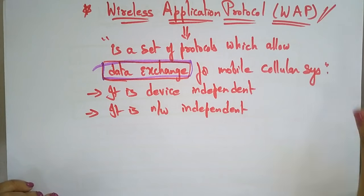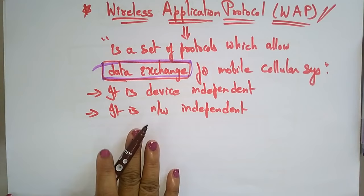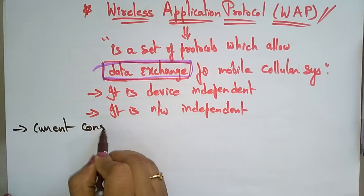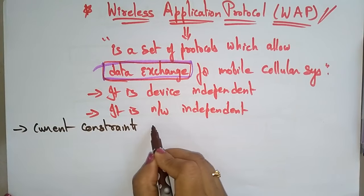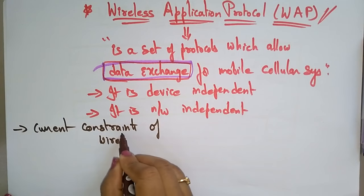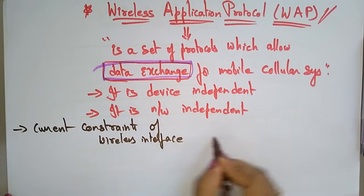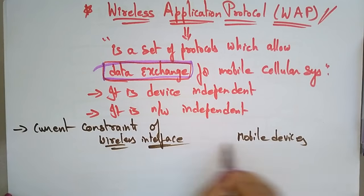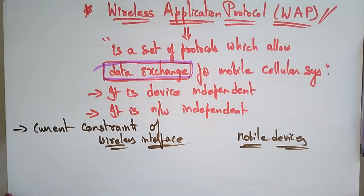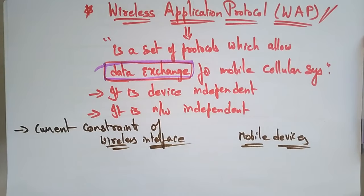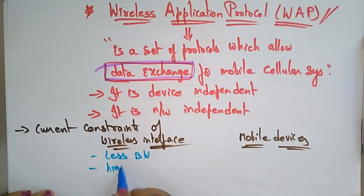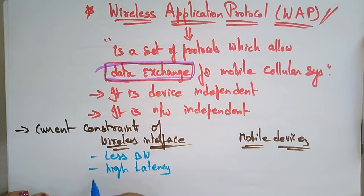Now let me give a brief overview of the current constraints of the wireless interface and mobile devices. For the wireless interface, the current constraints are: less bandwidth, high latency, and less stable connection.